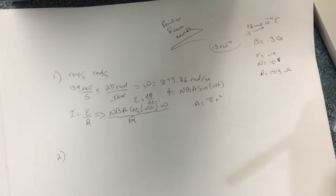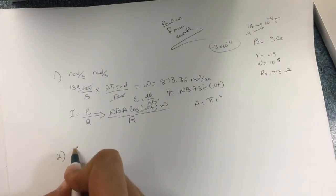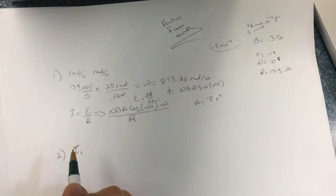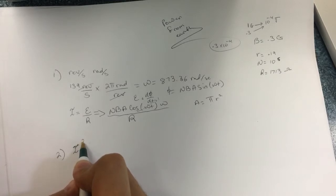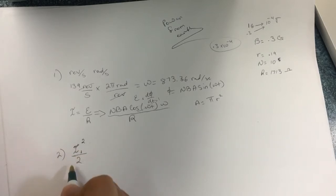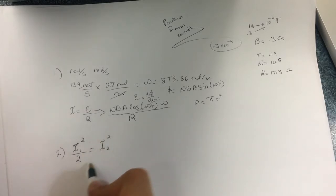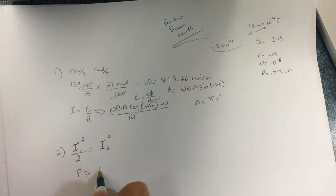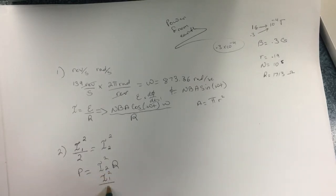Number two is the average of the square of the current. Let's call the peak current I₁. The average of the square of the current equals half the square of the peak current — so ⟨I²⟩ = I₁²/2. That's I₂ squared average.